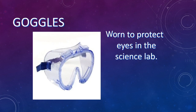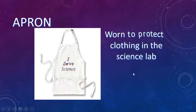Next is goggles. These are worn to protect your eyes while in the science lab. You're going to wear these almost every time you come into the lab — if you're working with chemicals, dissecting any animals, or anything that could be harmful for your eyes.